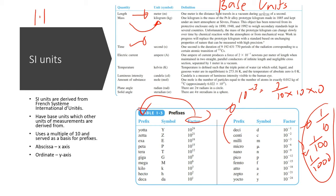For example, in the quantity length, the base unit would be meter. In quantity mass, the base unit would be kilogram. In the quantity time, it would be second. In the quantity electric current, it would be ampere. In the quantity temperature, it would be Kelvin. In the quantity luminous intensity, it would be candela. In the quantity amount of substance, the base unit would be mole. In the quantity plane angle, the base unit would be radian. In the quantity solid angle, it would be steradian. Those are the base units.